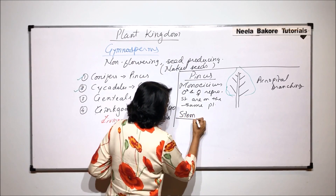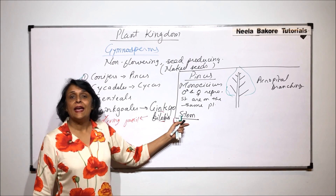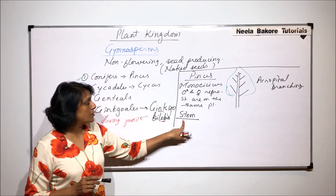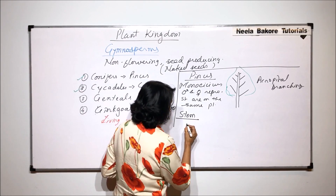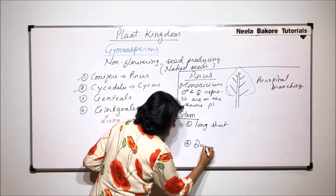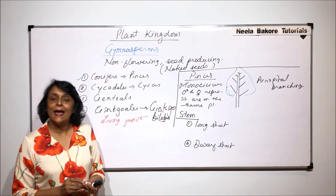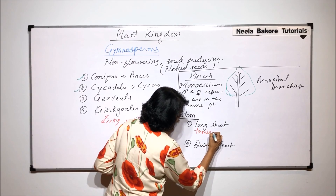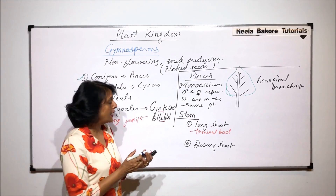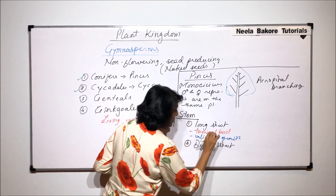These are more evolved plants compared to bryophytes and pteridophytes. They have well-developed structures like root, stem, and leaf, and vascular tissue is properly developed. When we come to the stem, there are two types of branches. The first is known as the long shoot, or long branch, which has a bud at its tip — a terminal bud — and because of this apical bud, it continuously grows. That means the long shoot has unlimited growth.